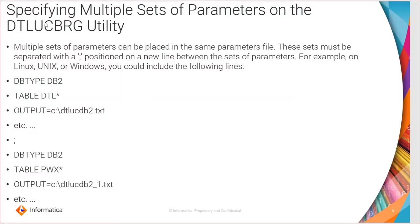You can also specify multiple sets of parameters for this utility. For example, you can set one set of parameters followed by a semicolon, then the next set of parameters. So if there are two registrations you want to make active or inactive, this can be done accordingly.